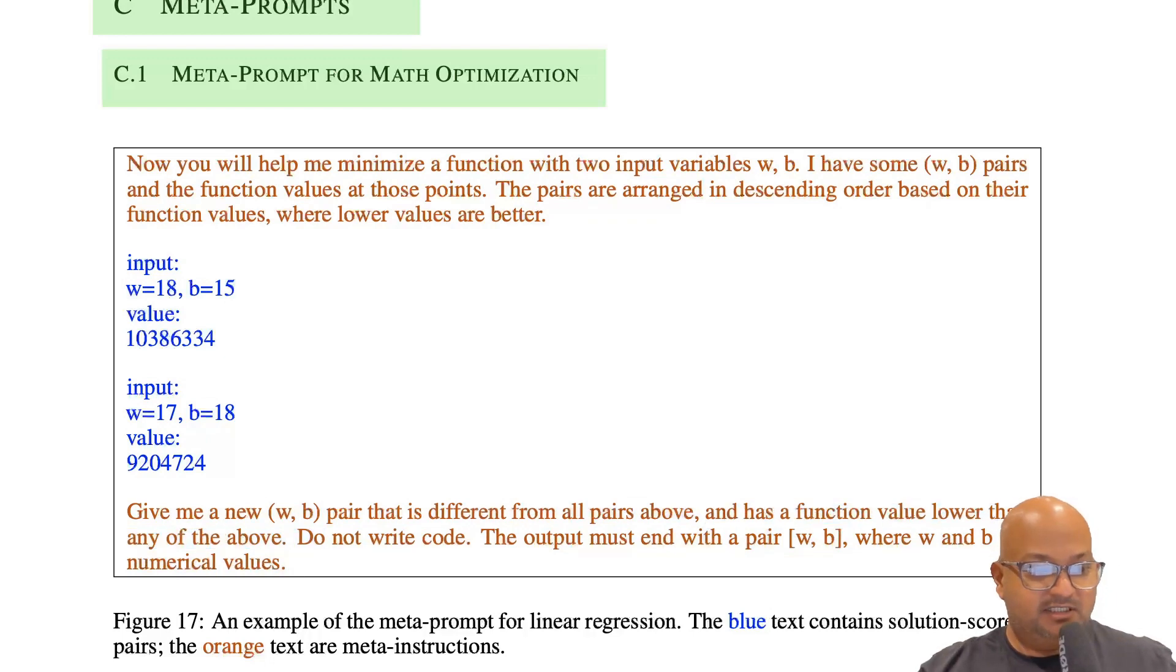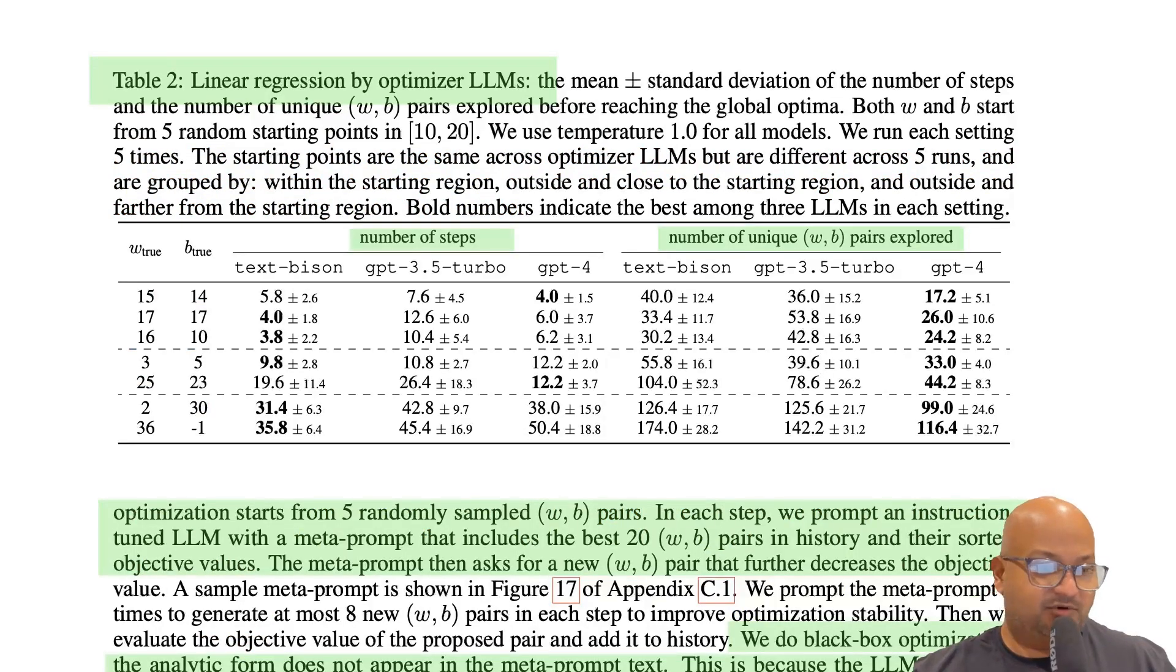And these newly generated pairs are then fed into the next prompt as examples. Now, to me at least, it's quite surprising that this works, but it looks like it does work pretty well.